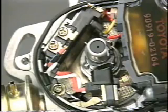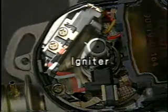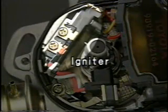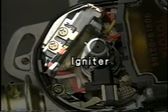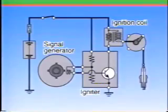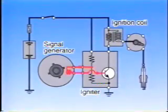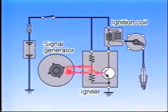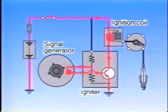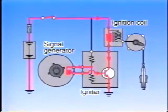These changes in the EMF cause the igniter to switch the primary current on and off. When the engine is running and the signal rotor tooth approaches the pickup coil, a voltage is generated in the direction shown in the diagram. The base current flows in the transistor, the transistor switches on, and the primary current flows in the coil.